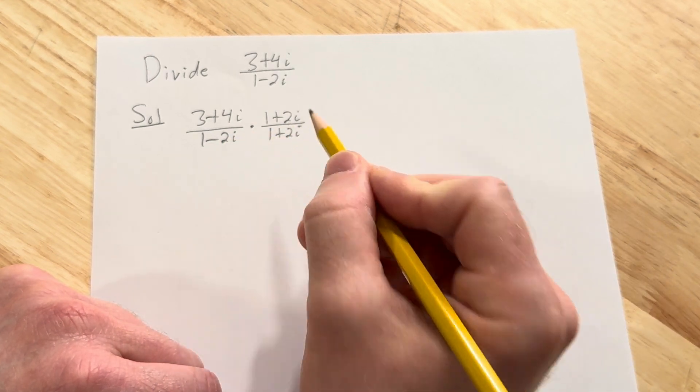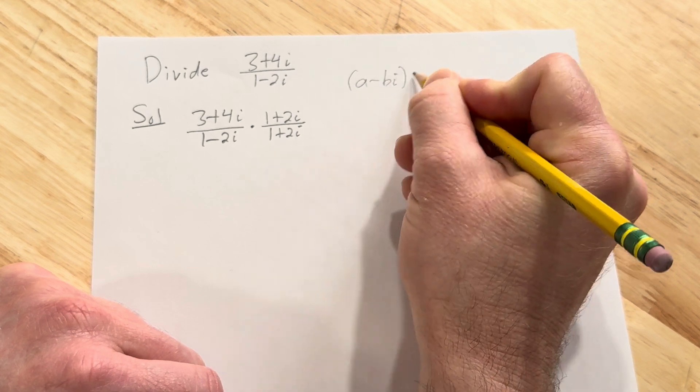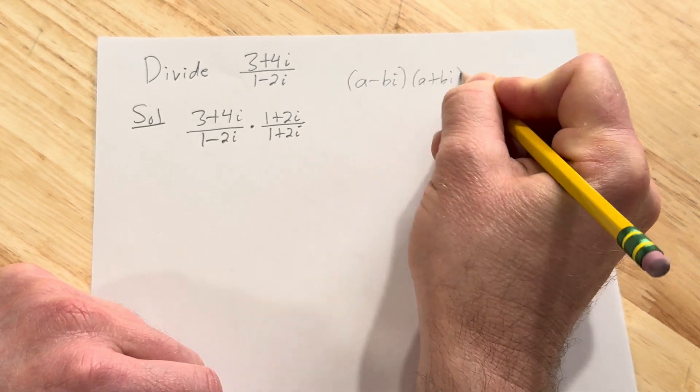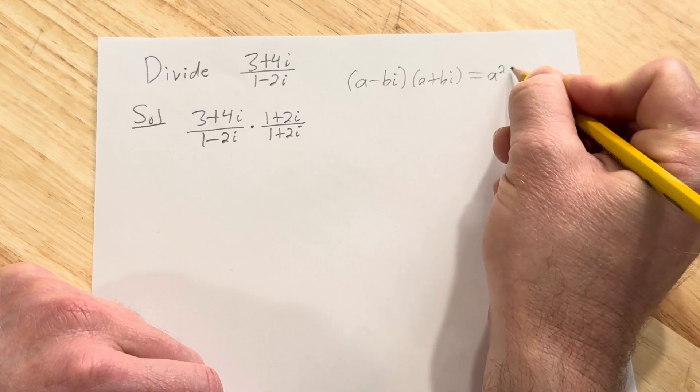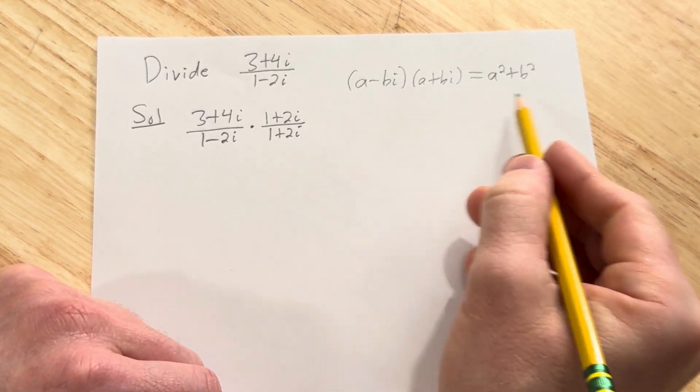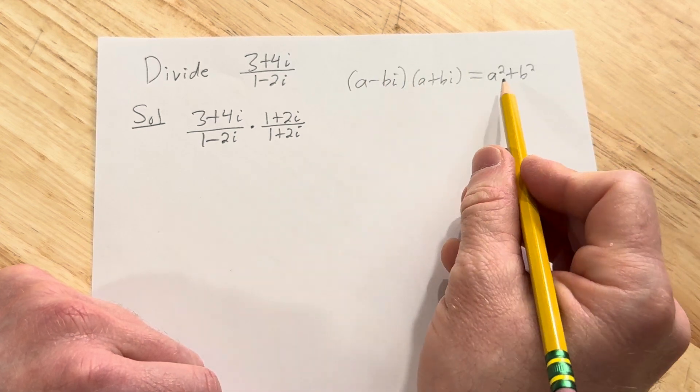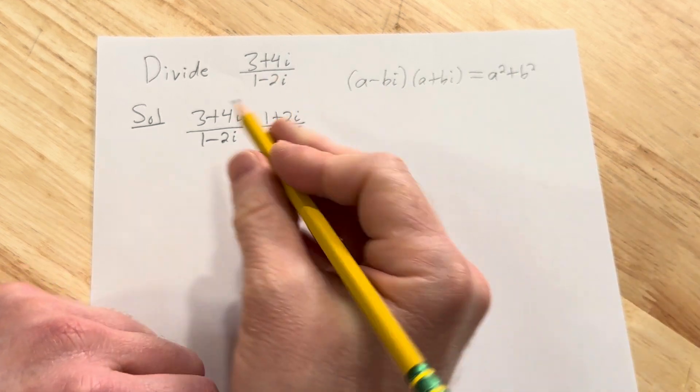And so now there's a formula we can use. It says that if you have a minus bi times a plus bi this is just a squared plus b squared. And this is a super powerful formula you can verify by just multiplying it out by using foil or distributing, and you will get this. So let's keep going.